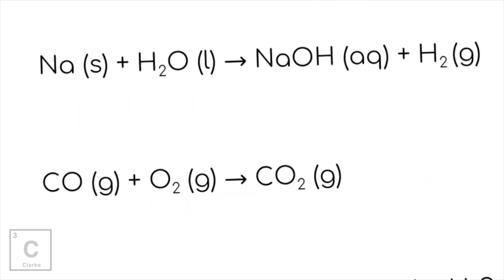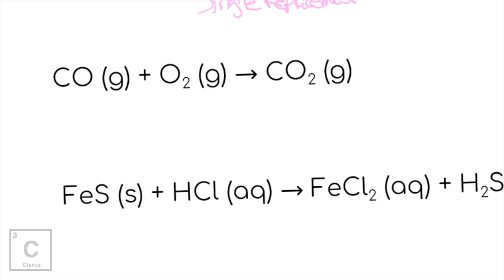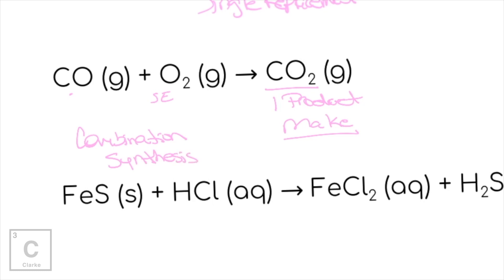Let's practice identifying some of these. Here we have a single element and a compound — A + BC. This is single replacement. Sodium came in and kicked out a hydrogen, and that left hydroxide available to bond with sodium. Sodium split water apart, got with OH, and left hydrogen out. Single replacement. Next example: we have a small compound and a single element, but we have one product. One product means we're making something — that's combination or synthesis. Your teacher might say synthesis or combination; the key was making one product.